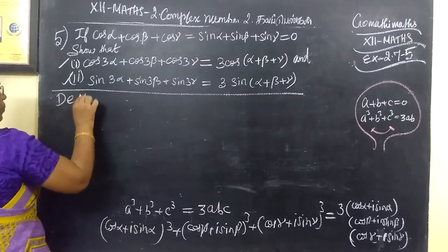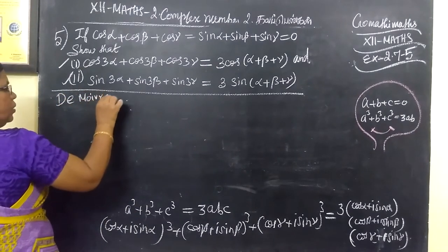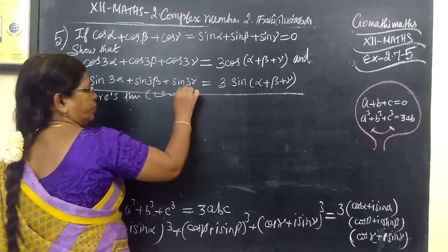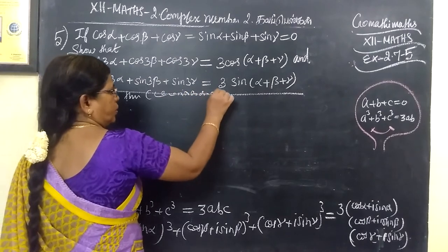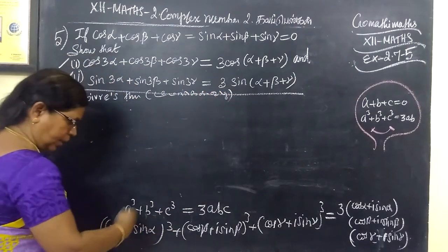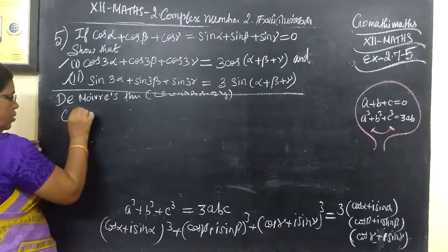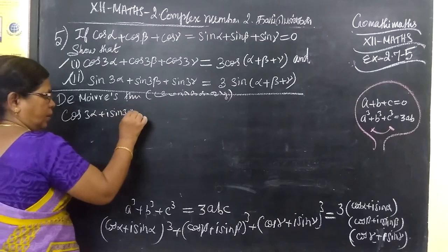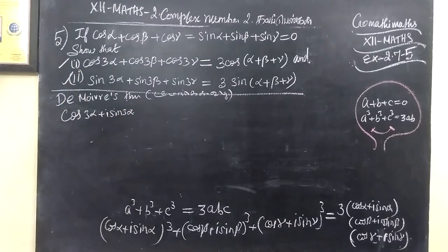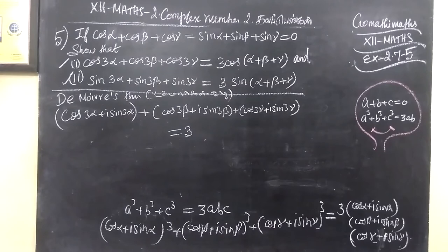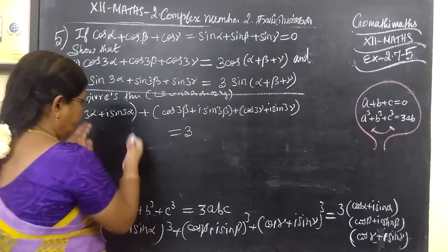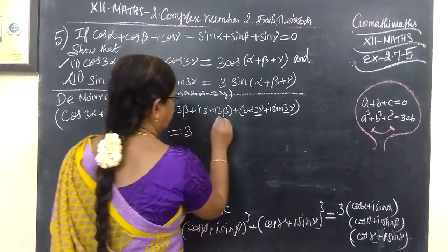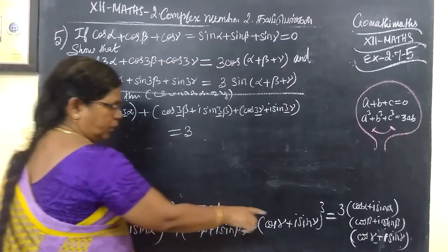We apply De Moivre's theorem. By De Moivre's theorem, (cos α + i sin α)³ = cos 3α + i sin 3α. Similarly for β and γ.